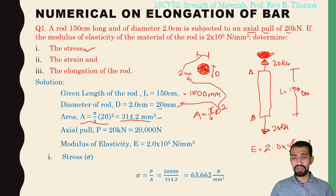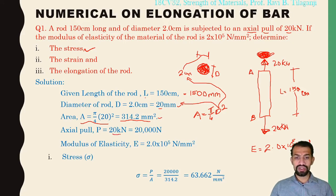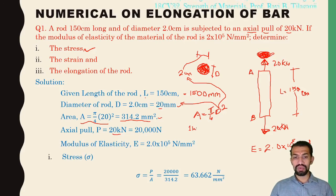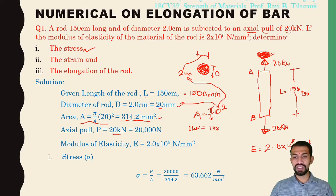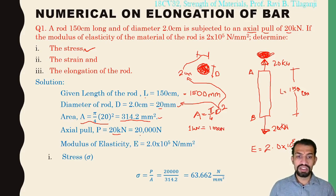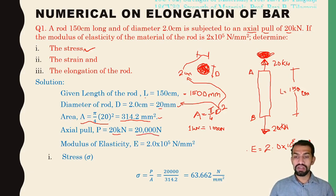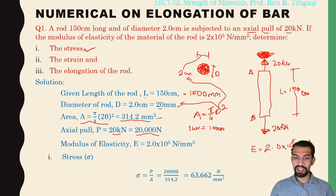The axial pull given is 20 kilo Newtons. Since 1 kilo Newton equals 1000 Newtons, this becomes 20,000 Newtons. The modulus of elasticity is given in Newton per mm² so we keep it as Newton per mm².